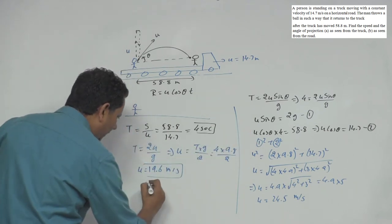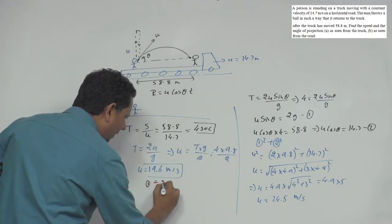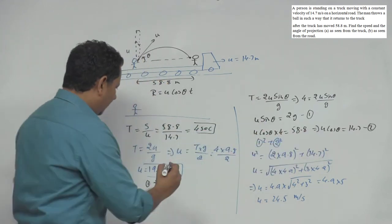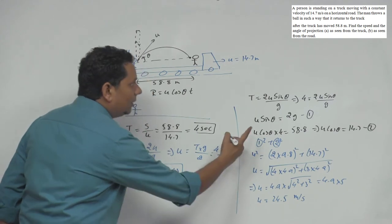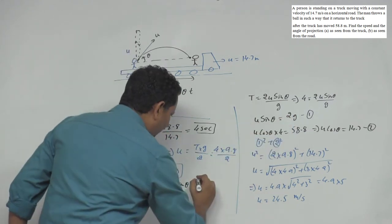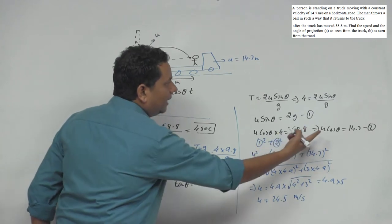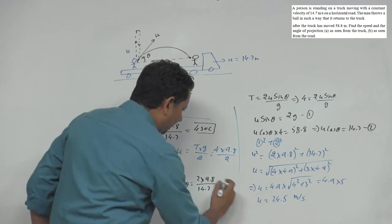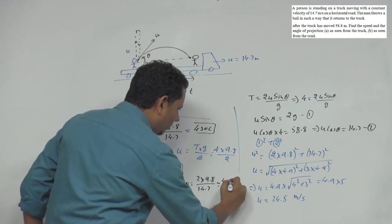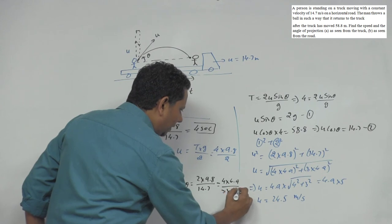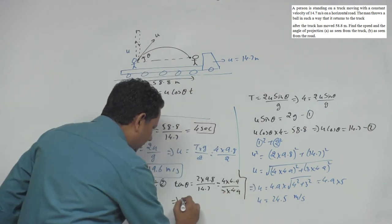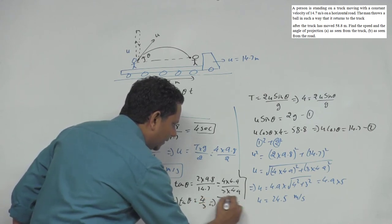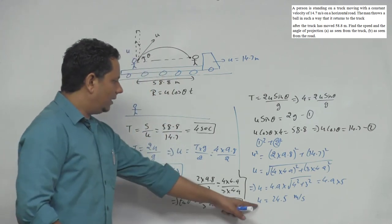Now to find theta: divide equation 1 by equation 2. The u cancels, so tan theta equals 2g divided by 14.7, which equals 2 multiplied by 9.8 divided by 14.7. This equals 4 multiplied by 4.9 divided by 3 multiplied by 4.9, giving tan theta equals 4/3. Therefore theta equals 53 degrees. So in the ground frame, the initial velocity is 24.5 m/s at 53 degrees.